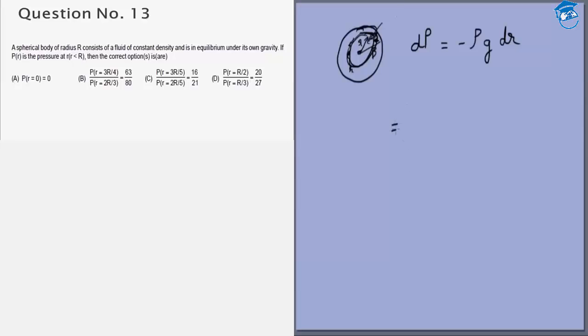This will be equal to, and we are given the density is constant so rho is constant, so minus rho dr times g. Now we know the formula for g: g will be capital G by r squared into 4 by 3 pi r cubed rho, because the only mass that will contribute is the mass inside. The mass outside will not contribute.